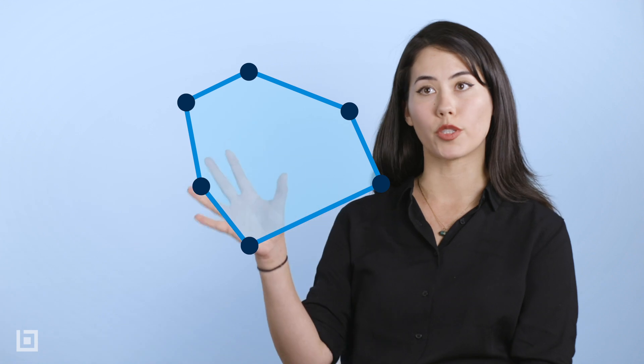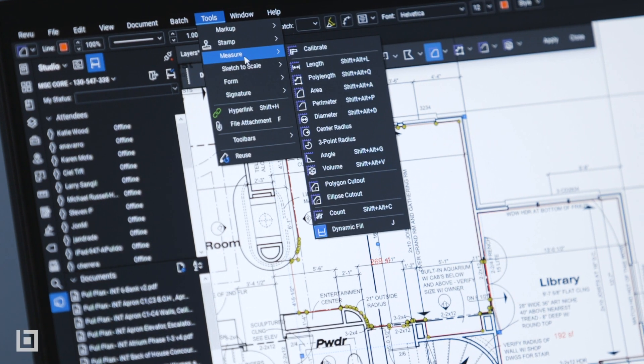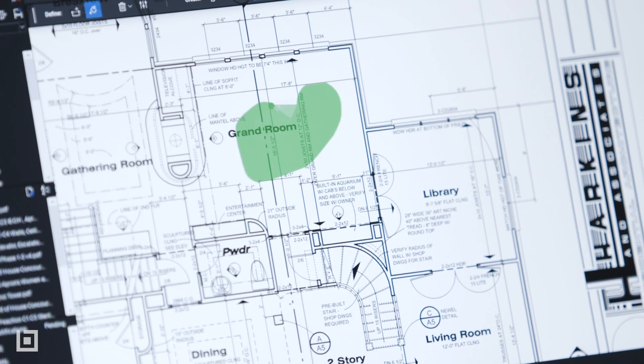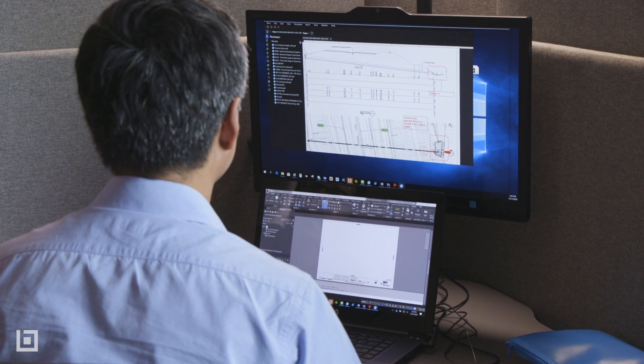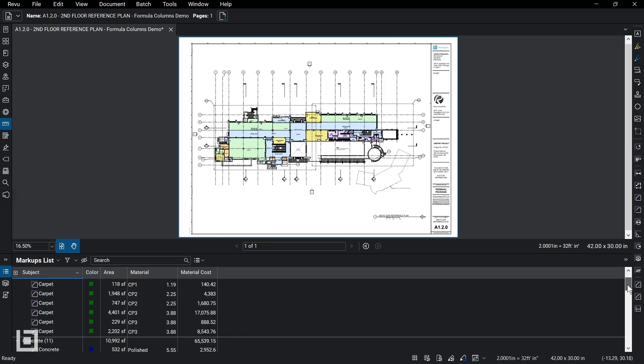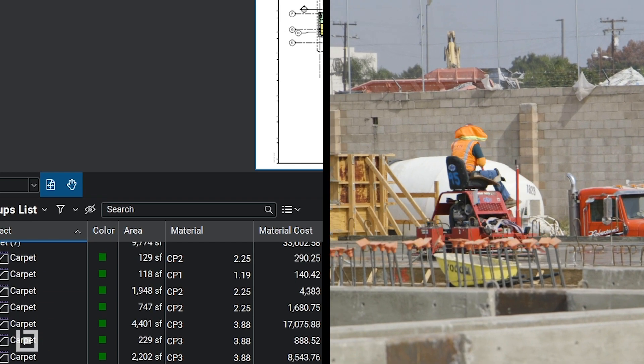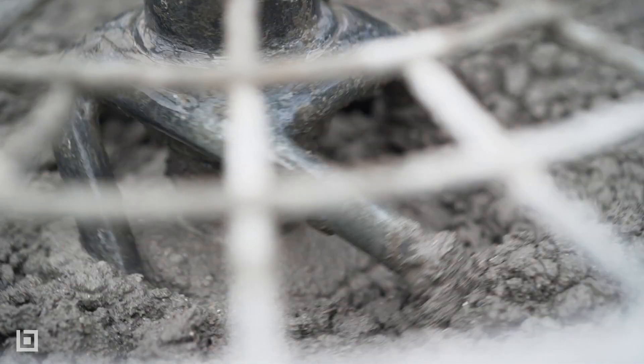A common use that I have for it is quantity takeoff. When I'm going in and I'm drawing out these geometric boundaries on rooms, I've measured 50,000 square feet of this floor type. An estimator could look at that and apply a dollar amount per square foot and could get a rough estimate of the cost of direct work for that area.